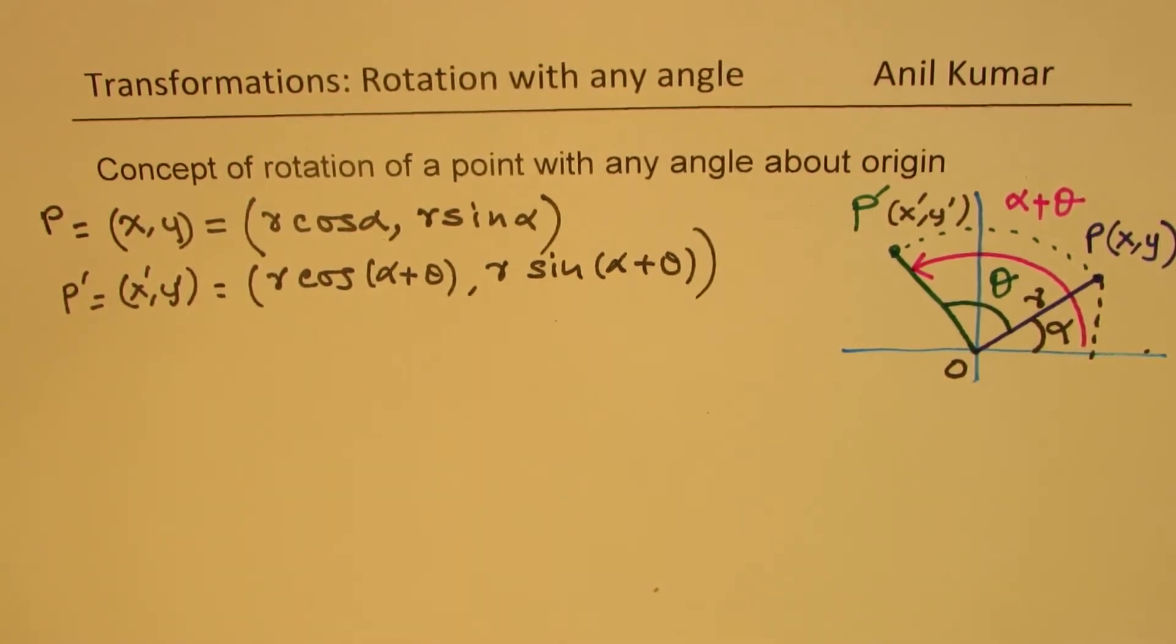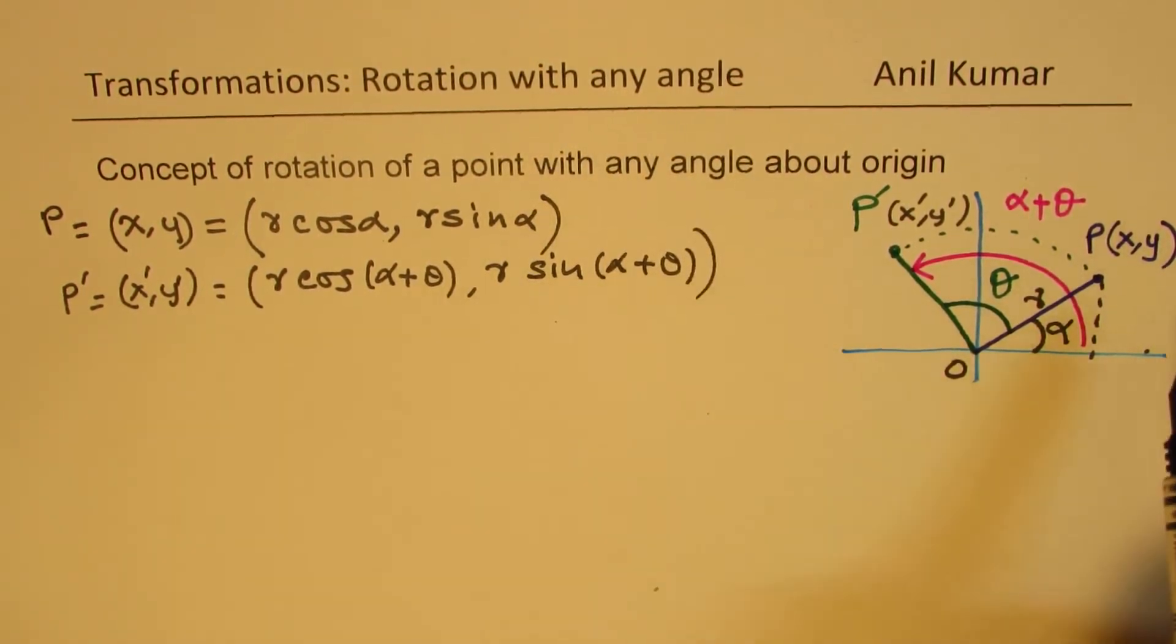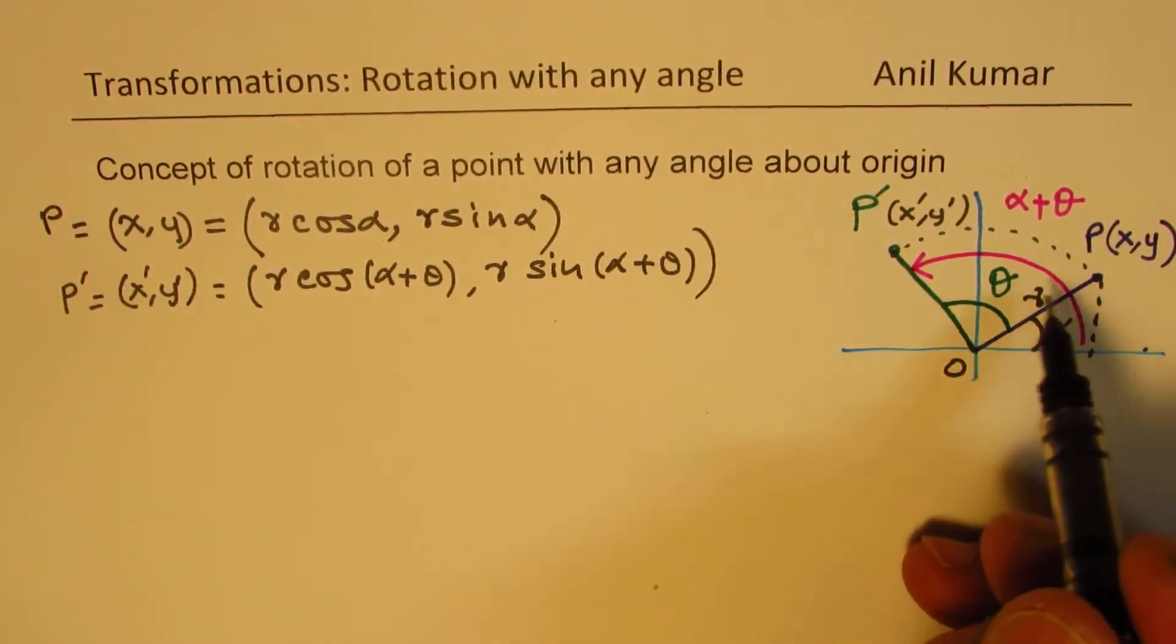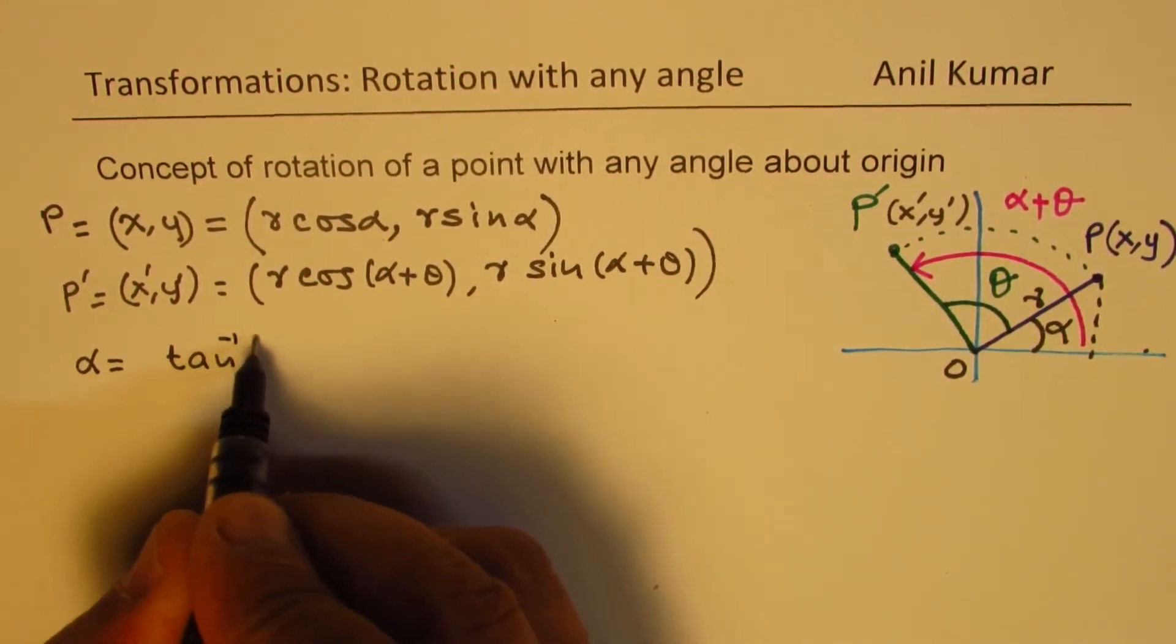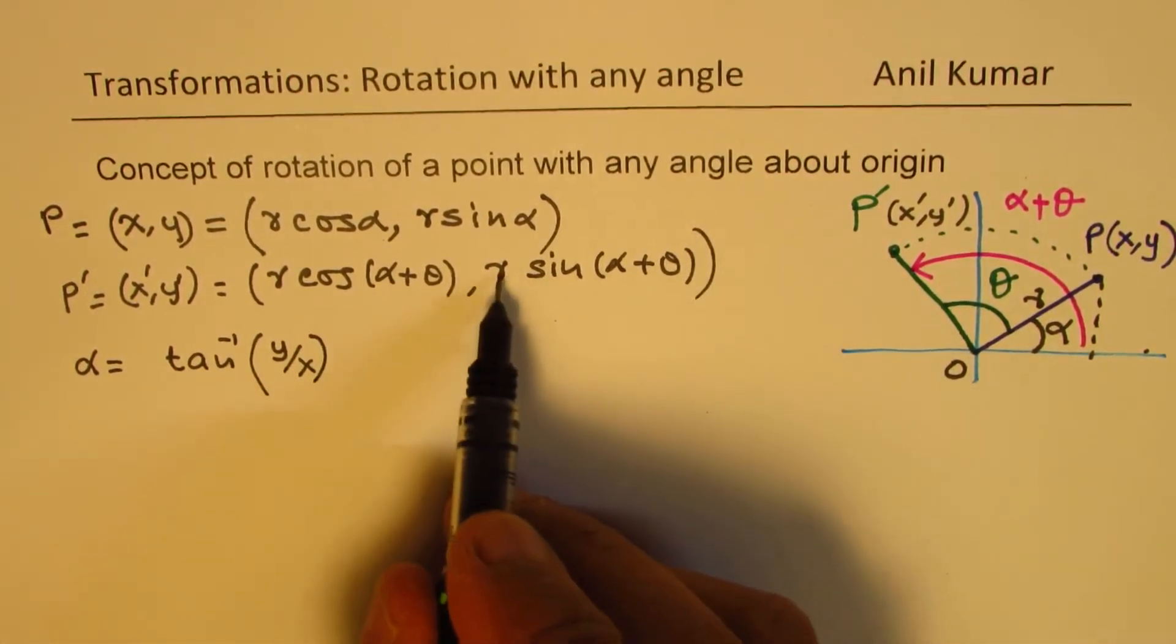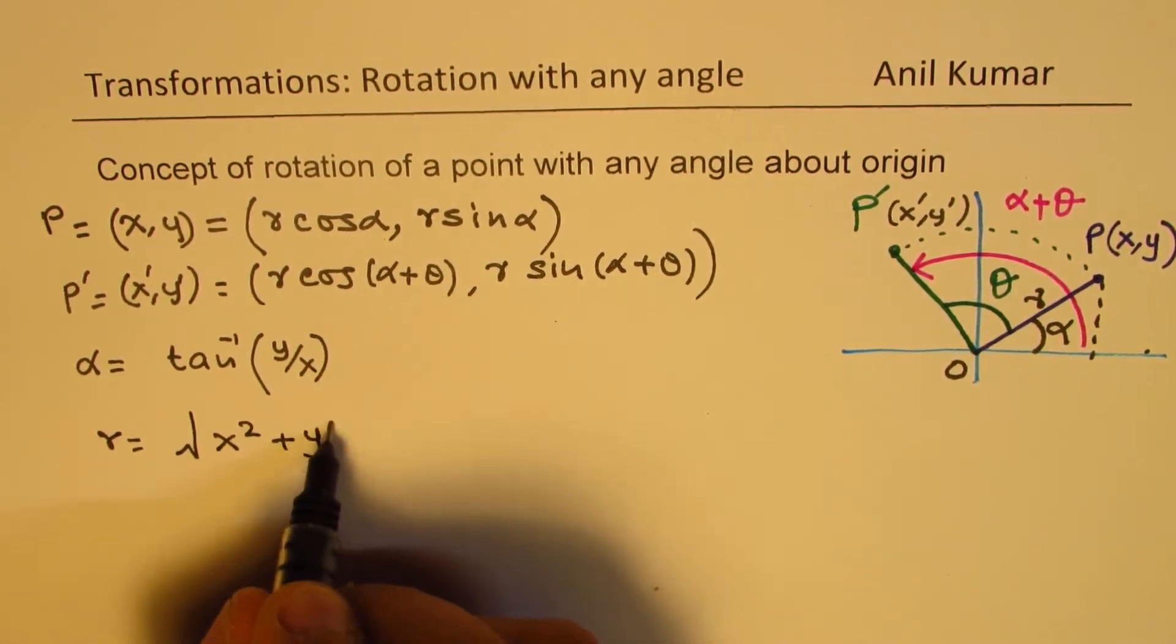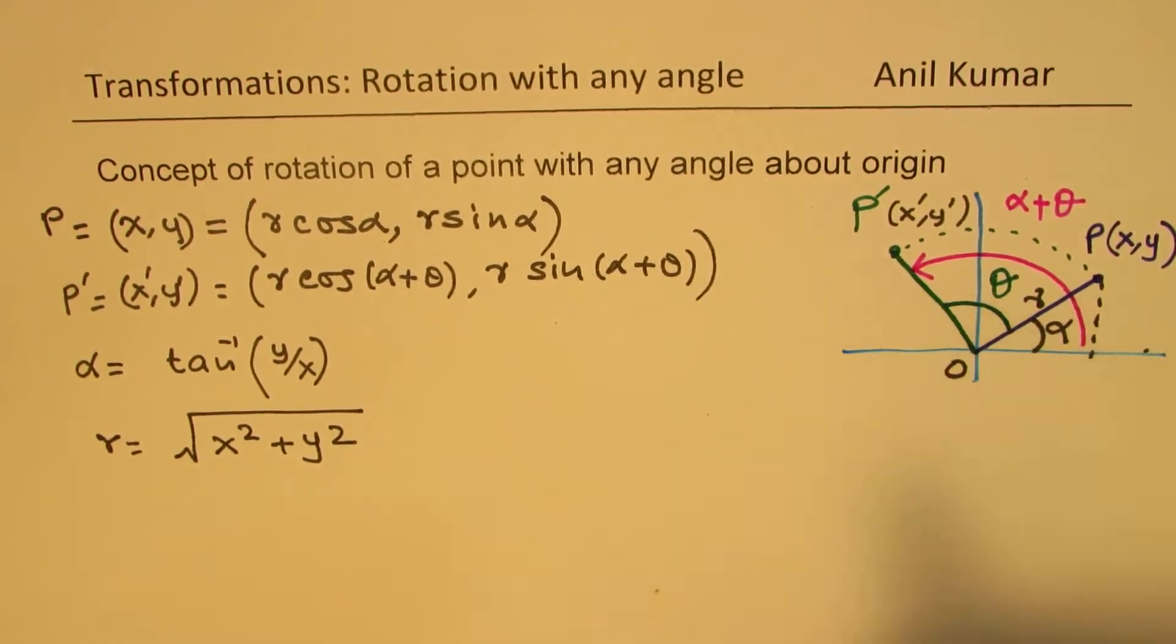So it's absolutely clear. So that is how we are going to do questions based on rotation with any angle. So initially, if you want, you can always calculate the angle alpha. So in this particular case, alpha is equal to tan inverse of y over x. And as far as r is concerned, r is square root of x square plus y square.